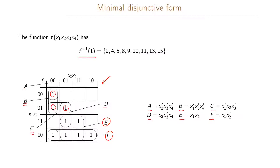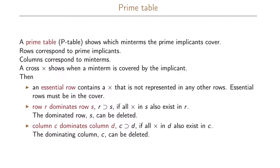What we're going to do now is describe a more structured way of finding the minimized function, which will always give us one function that is of minimum form, but will not give us all the functions of minimum form. The prime table, sometimes called the p-table, shows which of the minterms our prime implicants will cover. The rows correspond to the different prime implicants, the columns correspond to our minterms, and we put a cross in the table to show when a minterm is covered by an implicant.